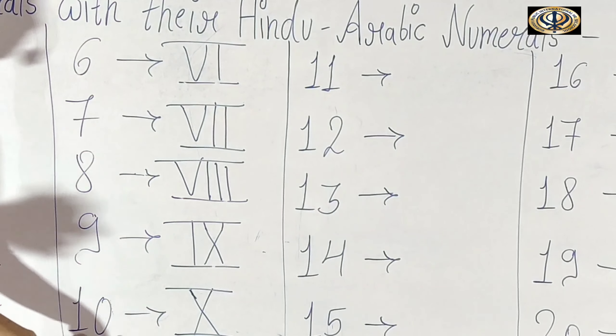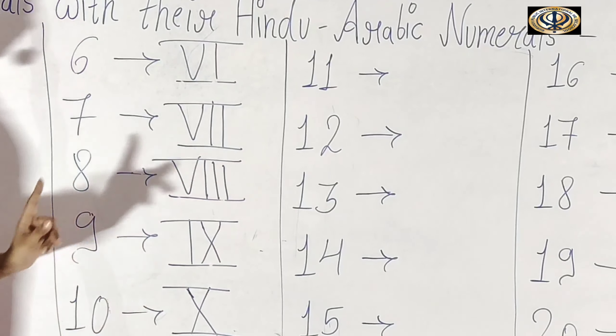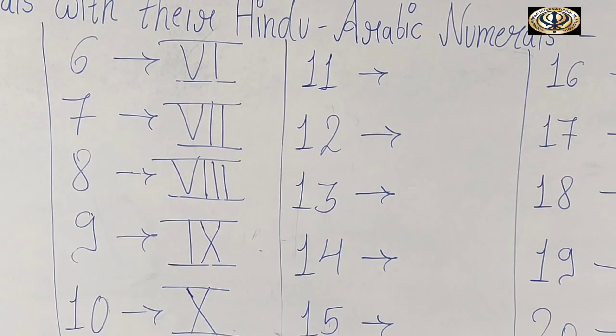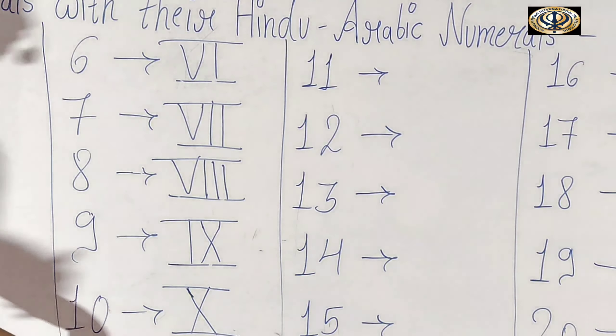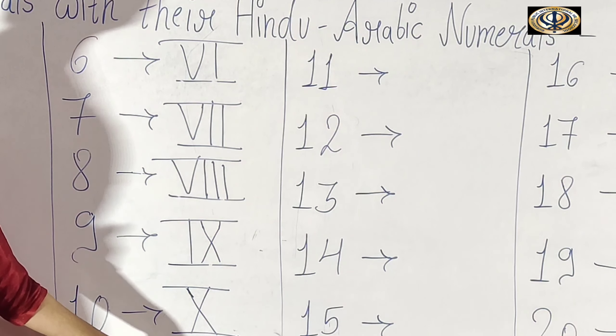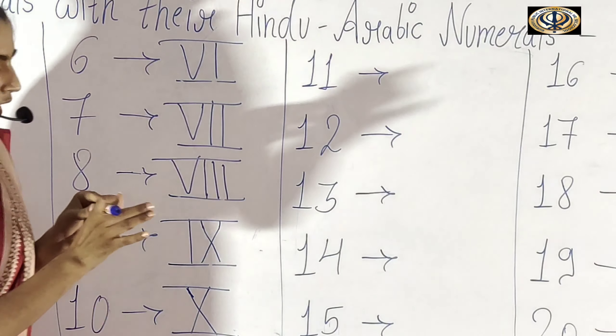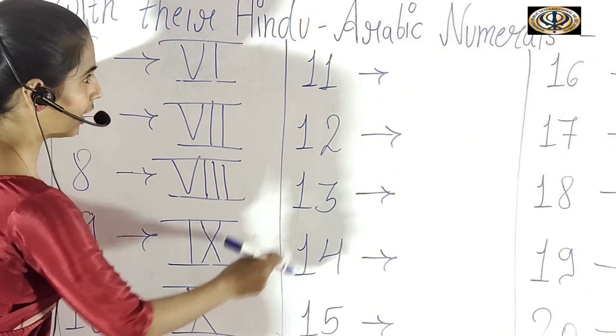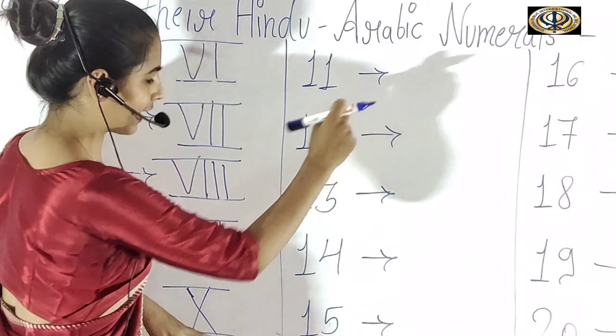Ab aap log dekhiye — ten ka Roman number X hai. Aap samajh gaye? Aapko five ka Roman number yaad rakhna hai ki five ka Roman number V hota hai, aur ten ka Roman number X hota hai. Ab 11 ka accountability karenye — X mein one plus hoga.